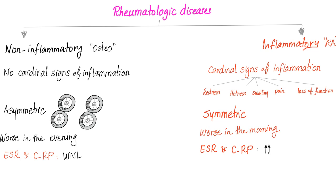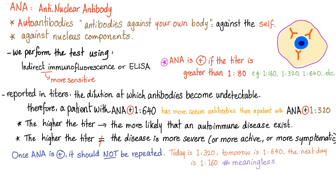I've explained why in the previous video. In non-inflammatory arthritis, the ESR and CRP are within normal limits. In inflammatory arthritis, both ESR and CRP are elevated. I've also talked about ANA in the previous video.